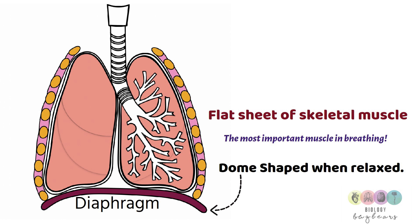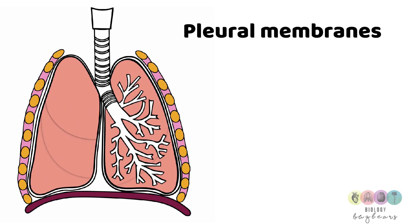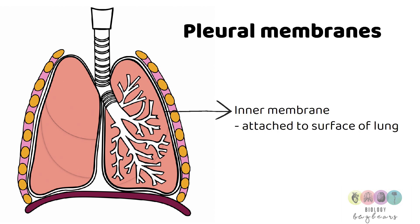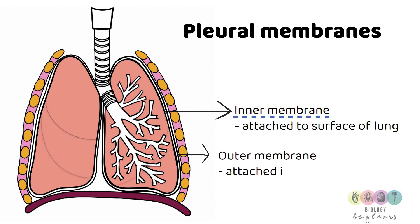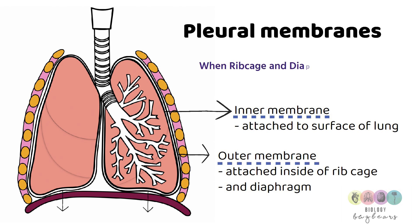The pleural membranes are really important and they help you understand what happens in breathing. The inner membrane covers the surface of each lung, and the outer membrane sticks the lung to the inside of the rib cage and to the bottom of the diaphragm. This means that when the rib cage and the diaphragm move, the lungs are going to move also — they stretch and then recoil.